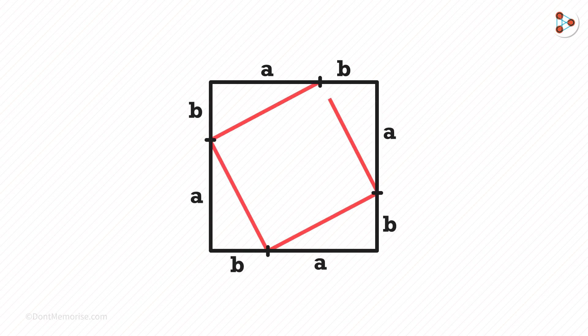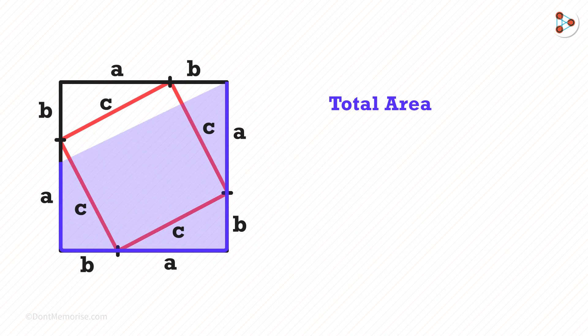If we join all the four points, then we get a square. Let the length of the sides of the square be c. The total area of the outer square will be a plus b times a plus b, which will be (a + b)².